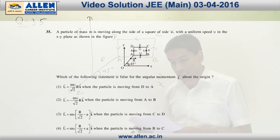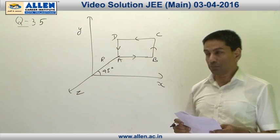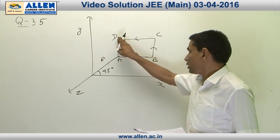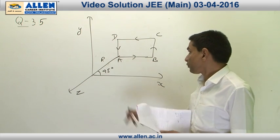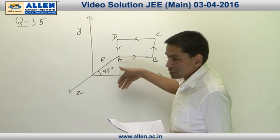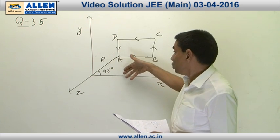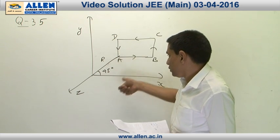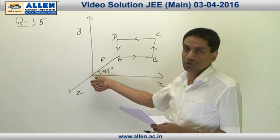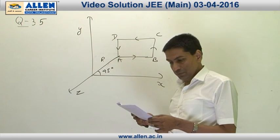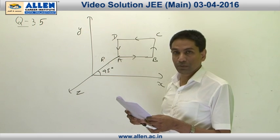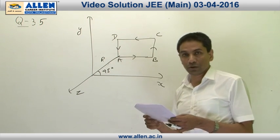35th question asks which of the 4 statements is false for the angular momentum L about the origin. Now, if the particle is moving along this particular path, then we can say its velocity is in this direction and its momentum is in this direction, so its angular momentum about the origin will be in the minus k-cap direction R cross P. In option 1, the angular momentum is given to be in plus k-cap direction, so it cannot be true.